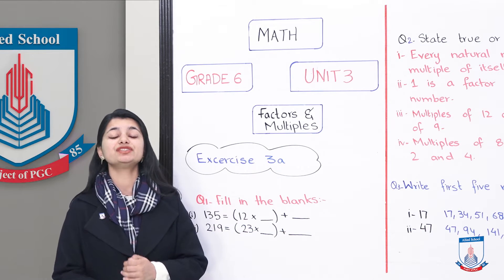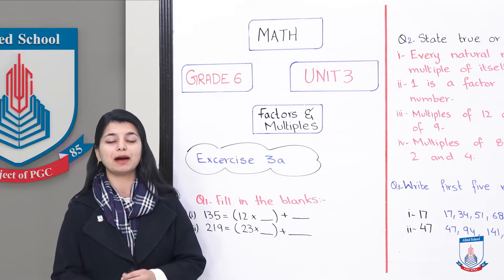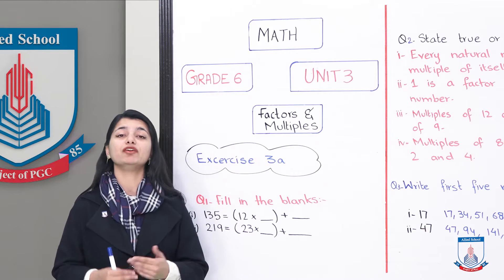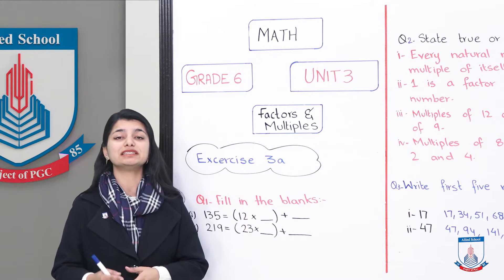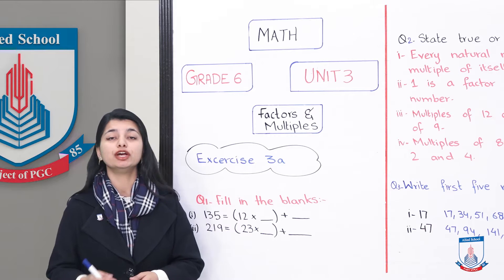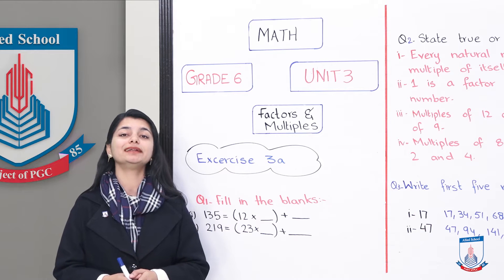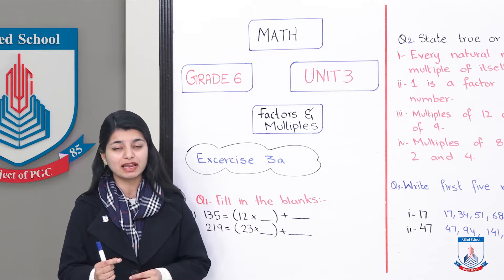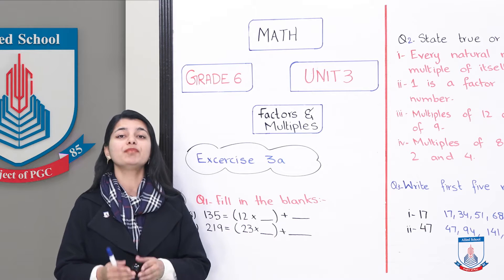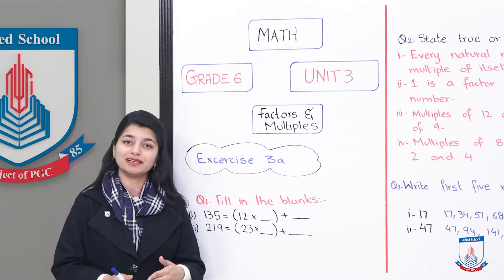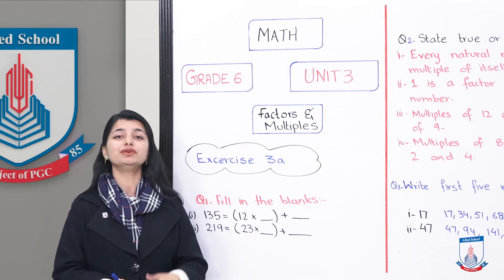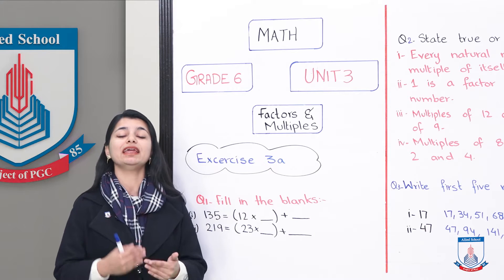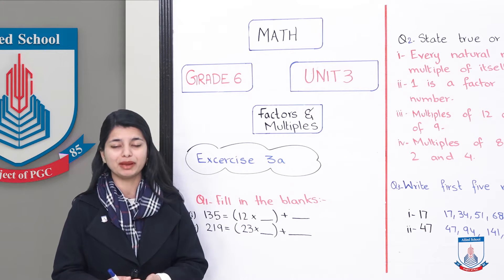In exercise 3, you basically have to learn about factors and multiples — all of those will be tested. We will start with fill-in-the-blanks, in which the rule is: dividend equals divisor multiplied by quotient, and then added by remainder.